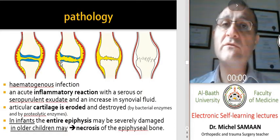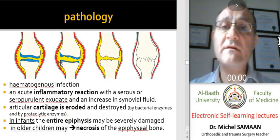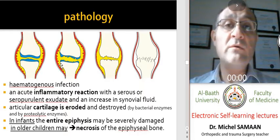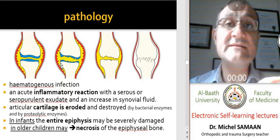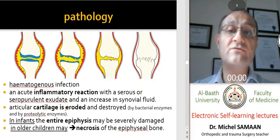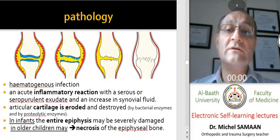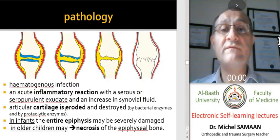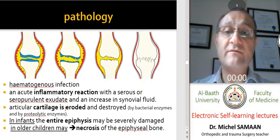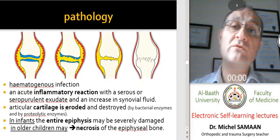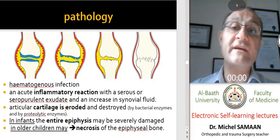With interleukin, TNF-alpha, and other destructive inflammatory factors, there will be destruction of this very important area, causing cartilage erosion and destruction. This leads to loss of joint function and loss of joint motion in the future, causing either ankylosis or even arthrodesis in some severe cases.